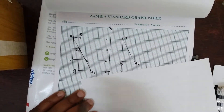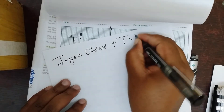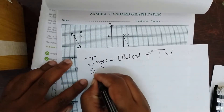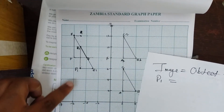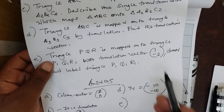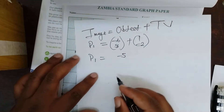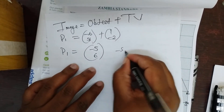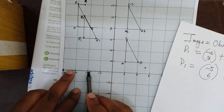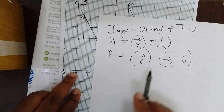Alternatively, image equals object plus translation vector. What is our image? It's the one we want to find — maybe P1. What is the object for P1? Negative 6, 8, plus our translation vector 1, negative 2. So P1 is negative 5 and 6, which is the same as negative 5, 6. When you plot here, this is 4 and that is 5 — half of it. This is 6, half of it is 5, comma 6. It will take you here. Negative 5, 6 — negative 5 is here, 6 is there.